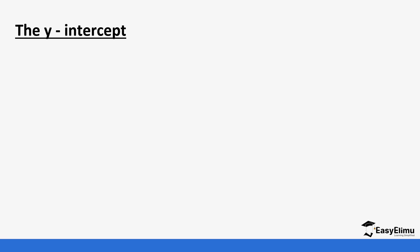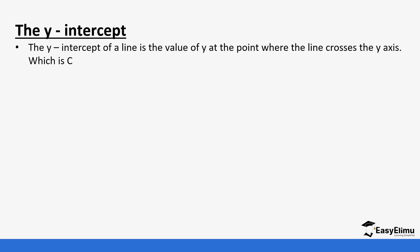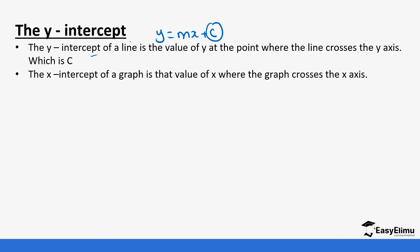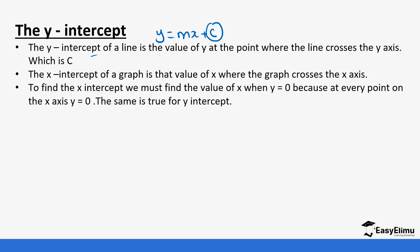When we look at this linear equation, we can determine the x-intercept and the y-intercept. In the equation y equals mx plus c, the c value is actually the y-intercept. The x-intercept of a graph is the value of x where the graph crosses the x-axis. To get the x-intercept, we find the value of x when y equals 0. And to get the y-intercept, we find the value of y when x equals 0.